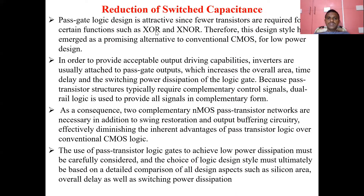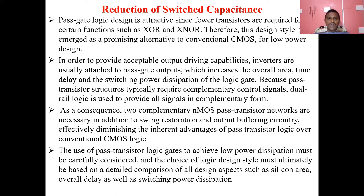Pass gate logic design is attractive since fewer transistors are required for certain functions such as XOR and XNOR gates, as compared with CMOS implementation. Therefore, pass gate logic has emerged as a promising alternative to conventional CMOS for low power design. Instead of conventional CMOS, we use pass transistor logic to design XOR and XNOR gates because it uses fewer transistors, making it preferable for low power design.